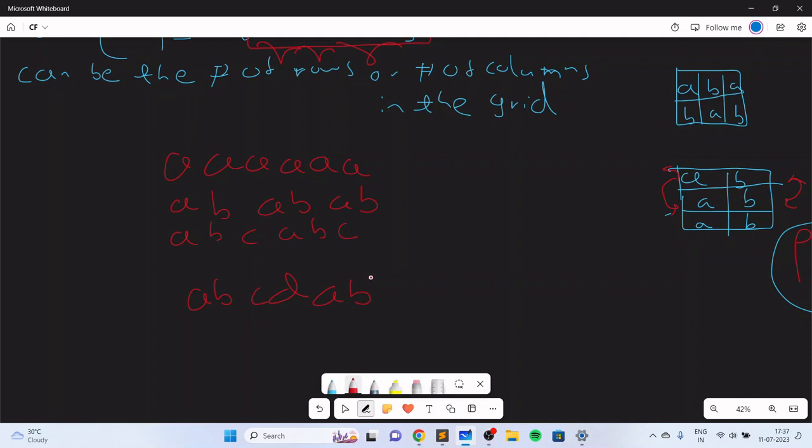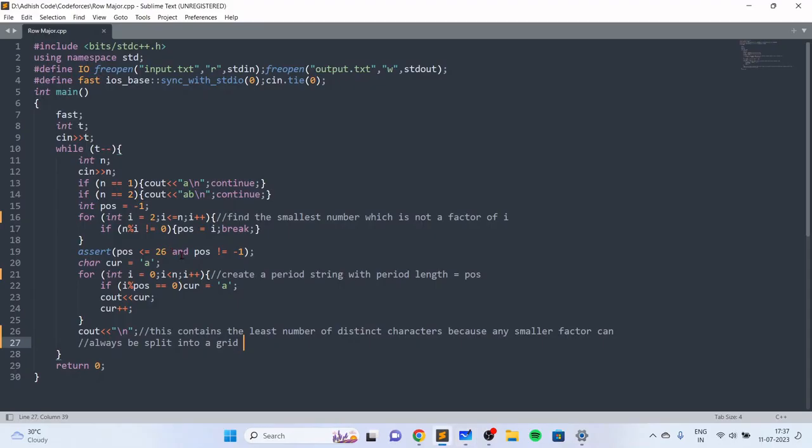That's basically the entire solution - you just find the first non-divisor and you print a periodic string which has that many number of characters.